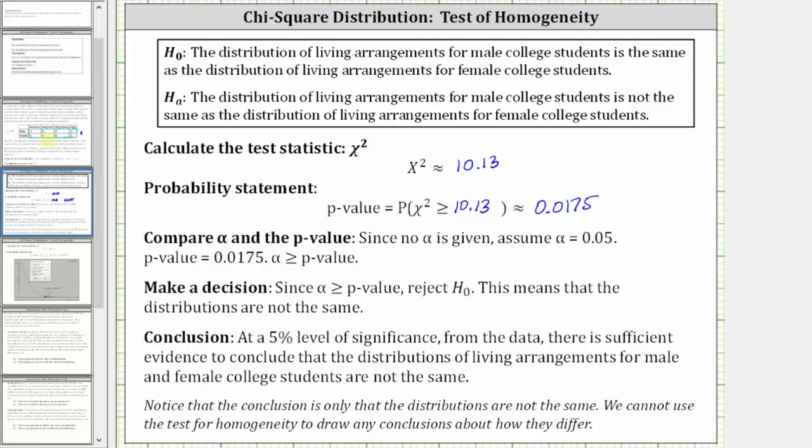Our final conclusion is: at a 5% level of significance, from the data there is sufficient evidence to conclude that the distributions of living arrangements for male and female college students are not the same. Notice the conclusion is only that the distributions are not the same — we cannot use the test of homogeneity to draw any conclusions about how they differ. I hope you found this helpful.